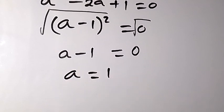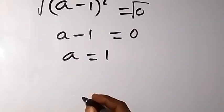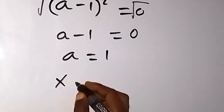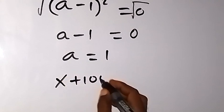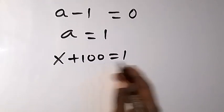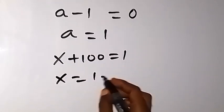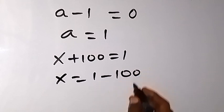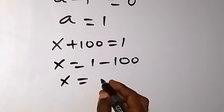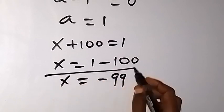We used x + 100 as a, so bringing that back, x + 100 equals 1. Taking 100 to the other side, we have x equals 1 minus 100, and therefore x equals minus 99.